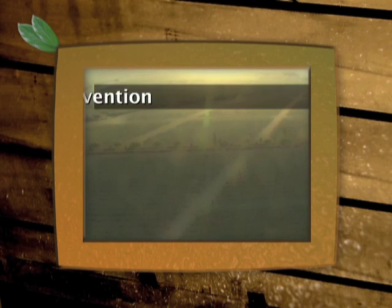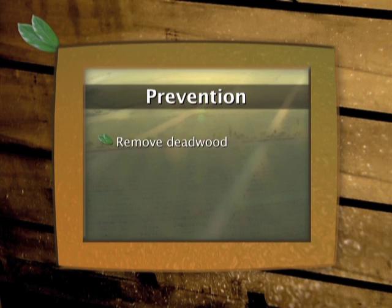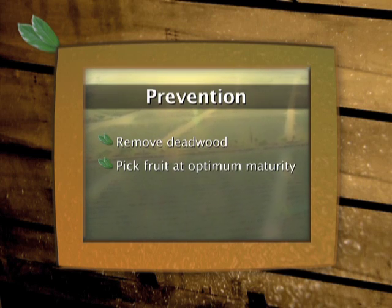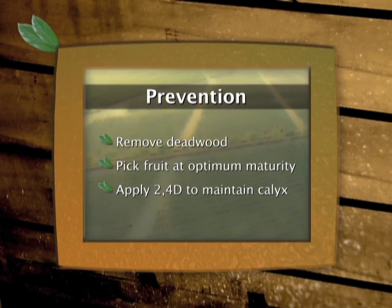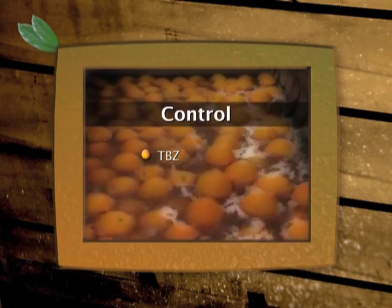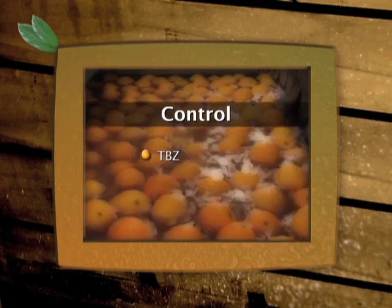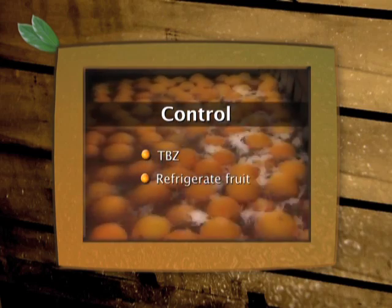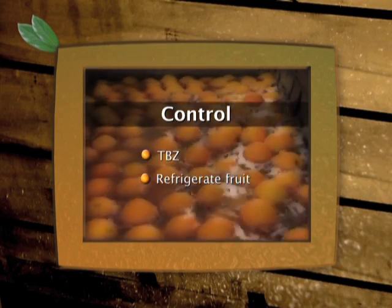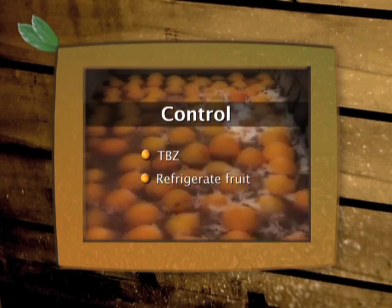This area then becomes an entry point to the fruit where the infection develops internally as well as externally. To prevent this disease, trees must be kept free of deadwood. Fruit should be picked before they become over mature, and 2,4-D can be applied in the packhouse to maintain a living green calyx on the fruit. Thiabendazole is effective for controlling Diplodia stem end rot. Refrigerating the fruit as soon as it is packed also helps to control this disease.